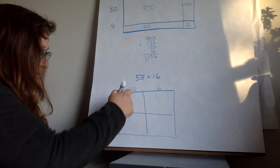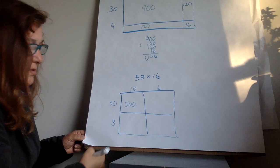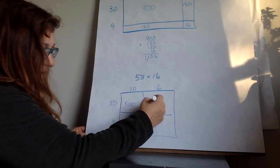So 50 times 10, 5 times 1 is 5. Add my two zeros. 5 times 6 is 30. And add my 0.